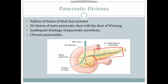Due to inadequate drainage, pancreatic enzymes accumulate in the body and tail of the pancreas, causing a rise in enzyme concentration. Once these enzymes are sufficiently concentrated inside the pancreas, they become self-activatory — they activate themselves and start damaging the pancreatic tissue. It is therefore common to see these patients presenting with chronic pancreatitis.